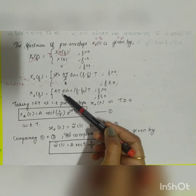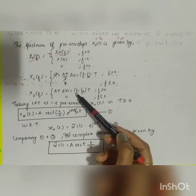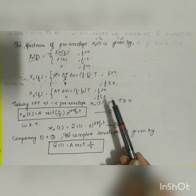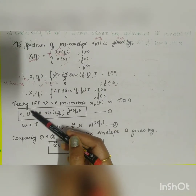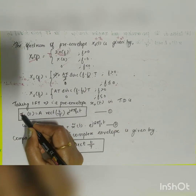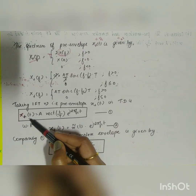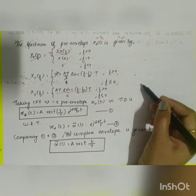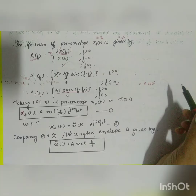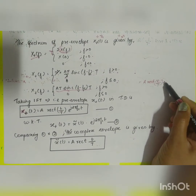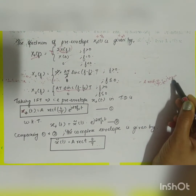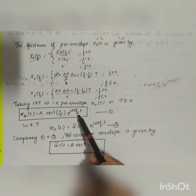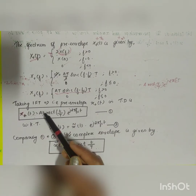The factor of 2 and the 2 in the denominator cancel, giving X⁺(f) = A·T·sinc((f − fc)·T) for f > 0, and 0 for f ≤ 0. Taking the inverse Fourier transform, x⁺(t) = A·rect(t/T)·e^(j2π·fc·t). This is the pre-envelope.